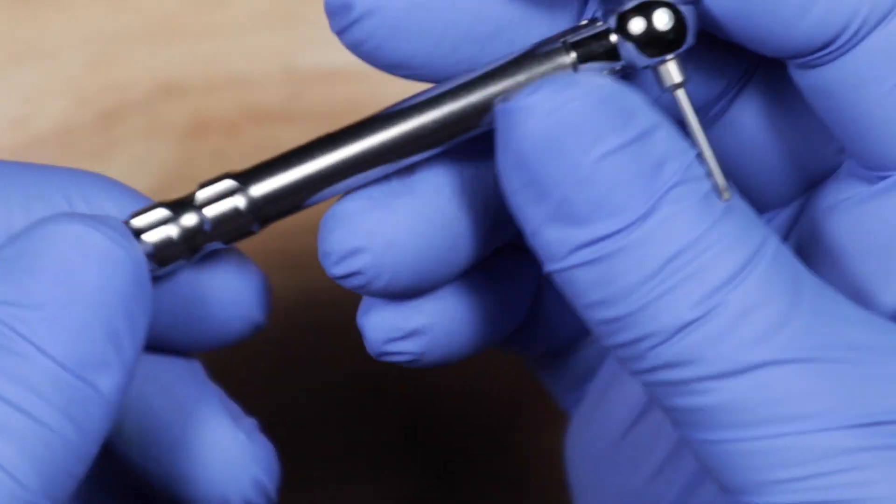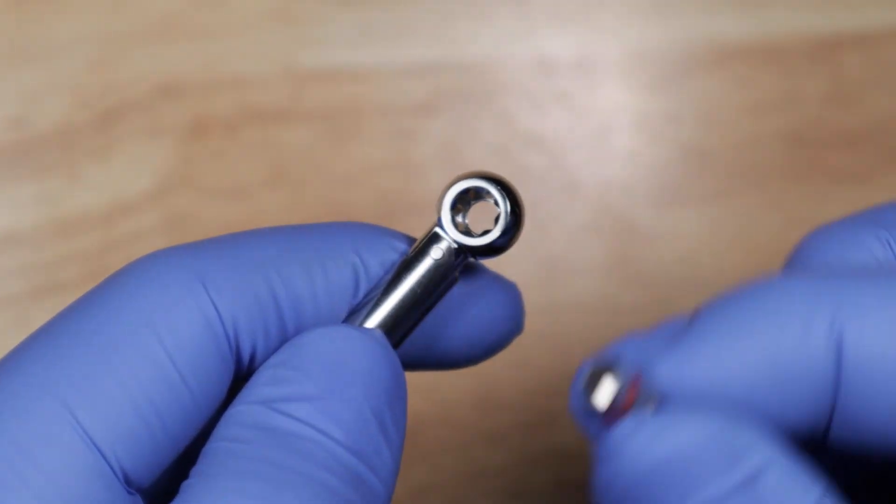That's about it though. This is the single setting torque wrench. Remember it's square right here. It takes a square bit.